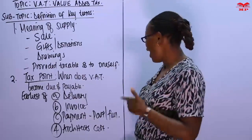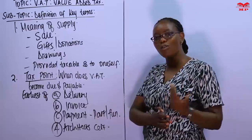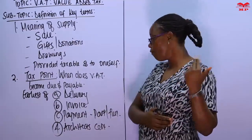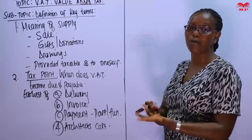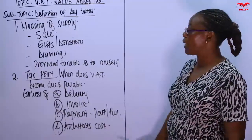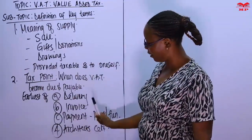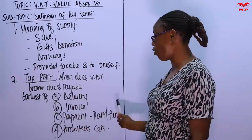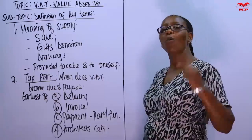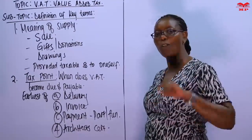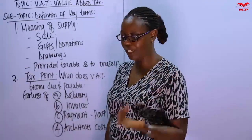That document is what you call an architect's certificate. It could be a surveyor or a supervisor, so long as it is someone authorized to determine the value of work done, on the basis of which the contractor will receive the money. So you compare the date of delivery, the date of invoice, the date when you received part or full payment, and the date on the architect's certificate — whichever comes first, that is the tax period in which that transaction will be accounted for VAT purposes.